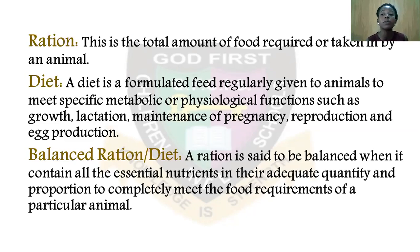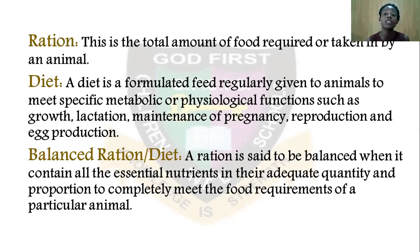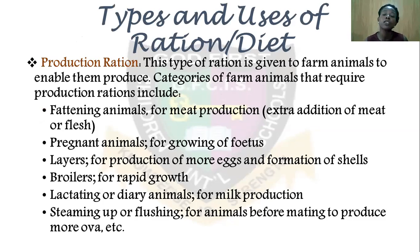Diet is formulated especially for a particular animal to suit the purpose for which it is raised. Ration is the total amount of food the animal eats. A ration or diet is said to be balanced when it contains all the essential nutrients in adequate quantity and proportion to completely meet the food requirements of a particular animal.